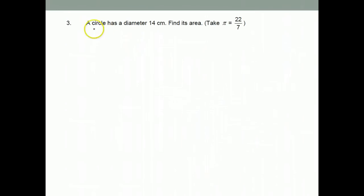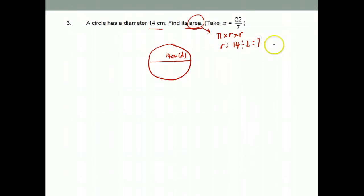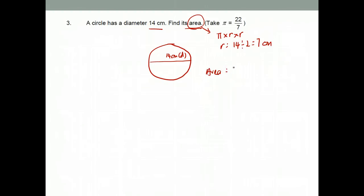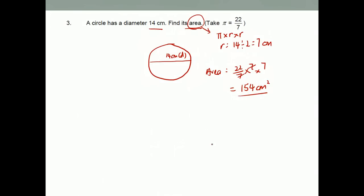Question 3. A circle has a diameter of 14 cm. Find its area. The diameter is 14 cm, so radius will be 14 divided by 2, which is 7 cm. Therefore my area would be pi times r times r — pi is 22 over 7 — radius is 7 times 7. And the answer is 154 cm squared.